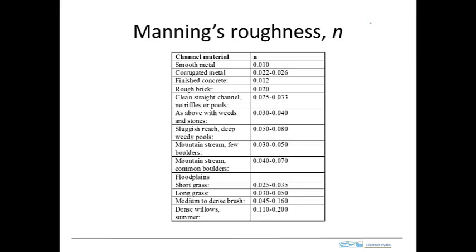The roughness of the bed is something that will cause resistance to flow in a stream. Here are some values of this roughness coefficient. A low value is for smooth metal, which will be a relatively low amount of resistance to flow. Dense willows is one of the high values, the highest in this table, ranging from 0.1 to 0.2. So n ranges from about 0.01 to 0.1 to 0.2.